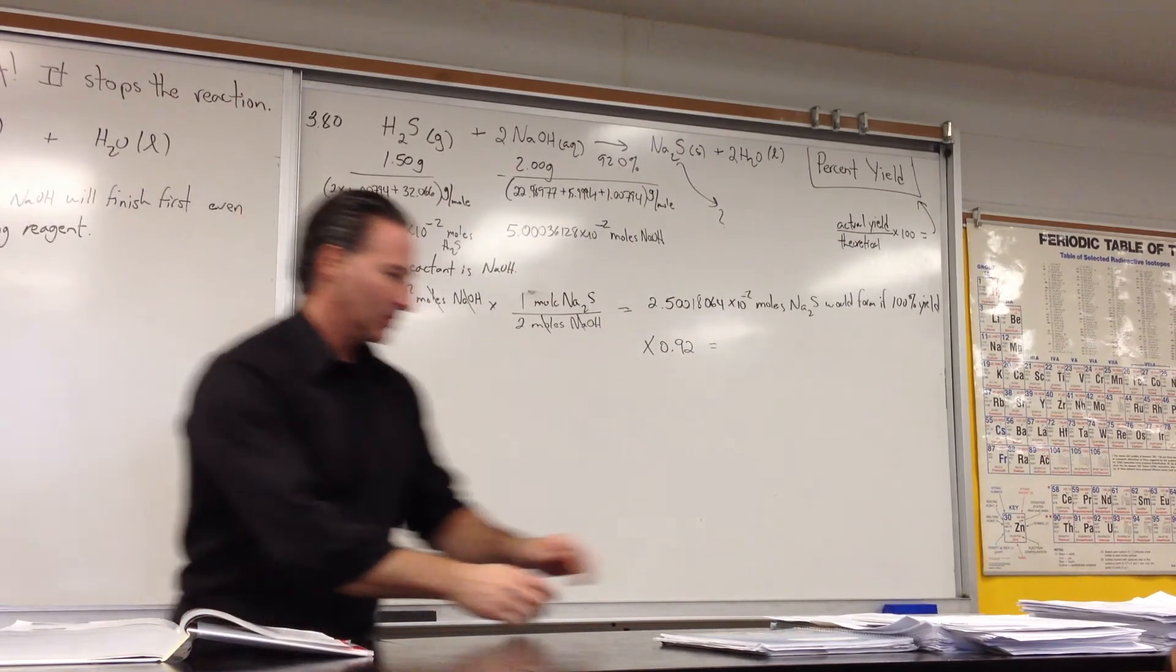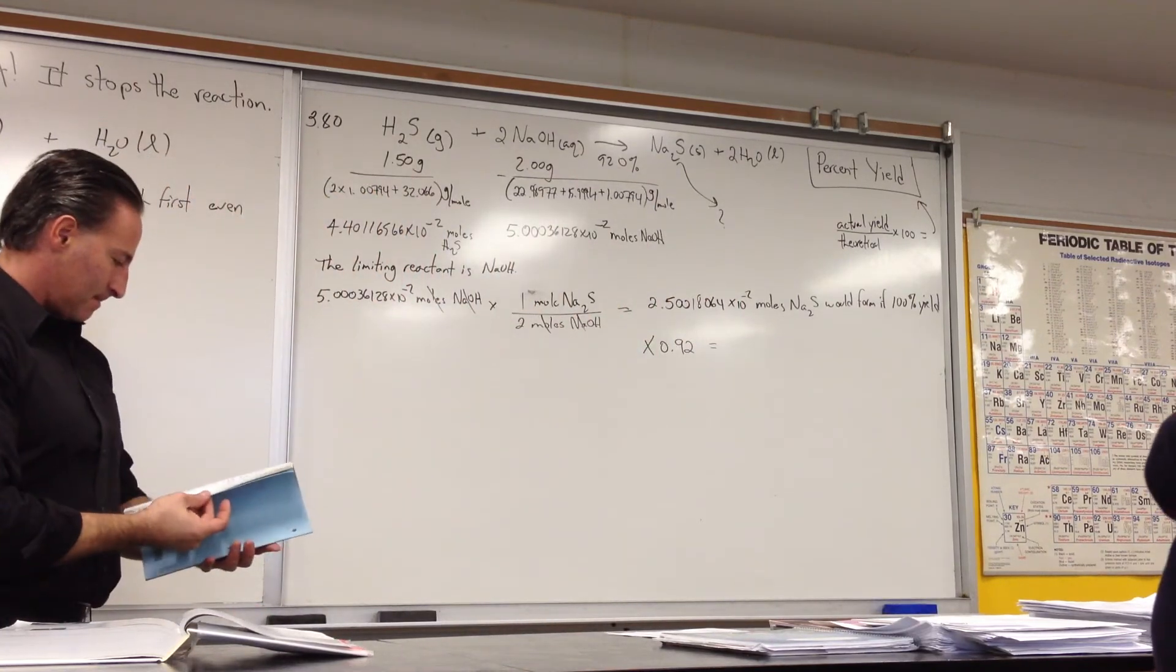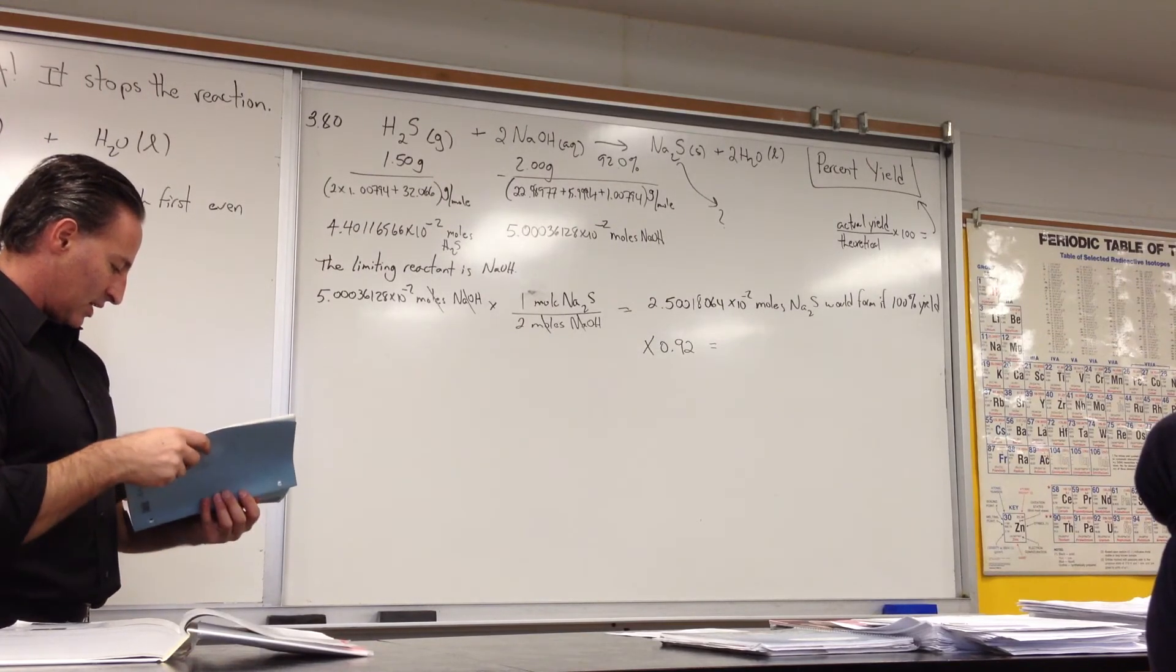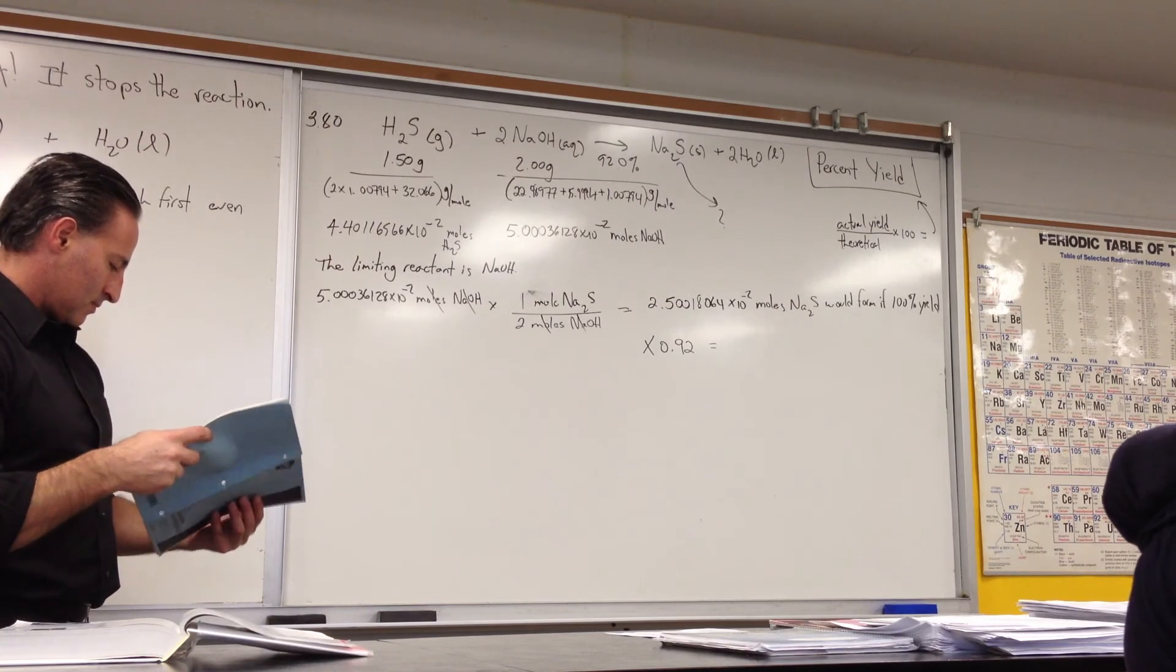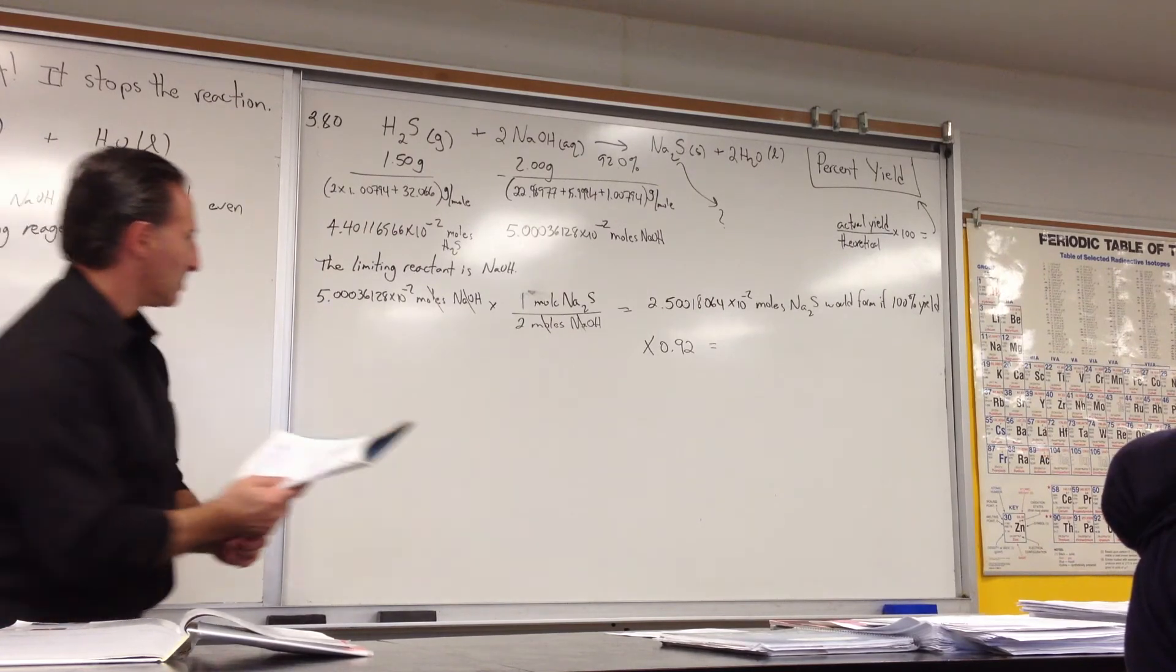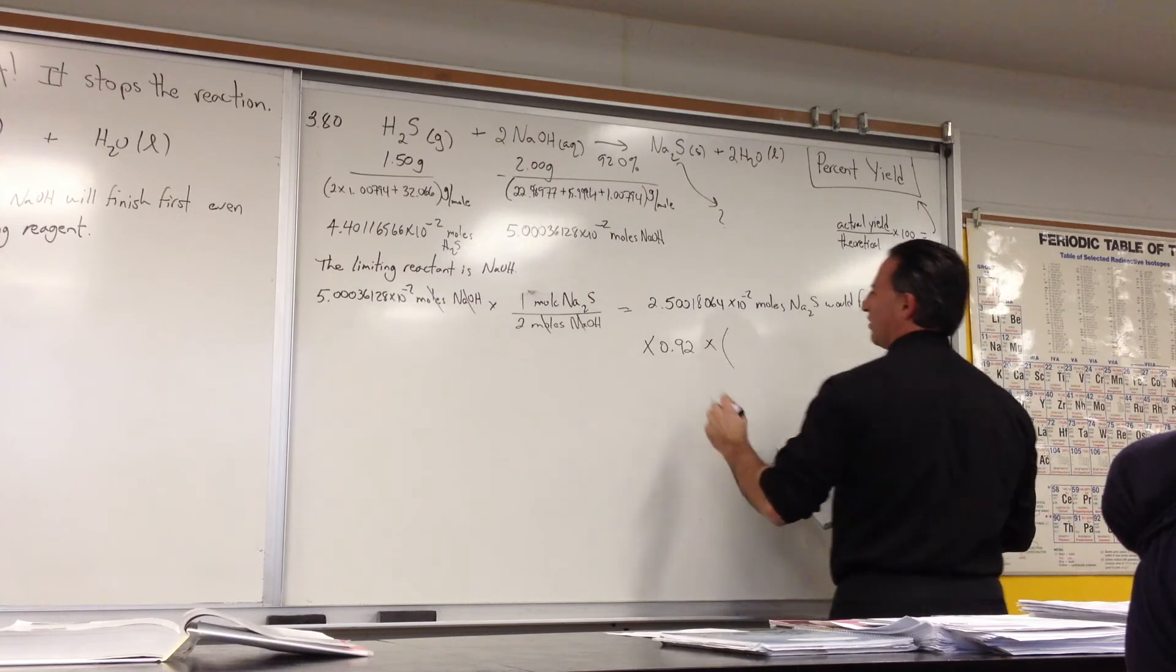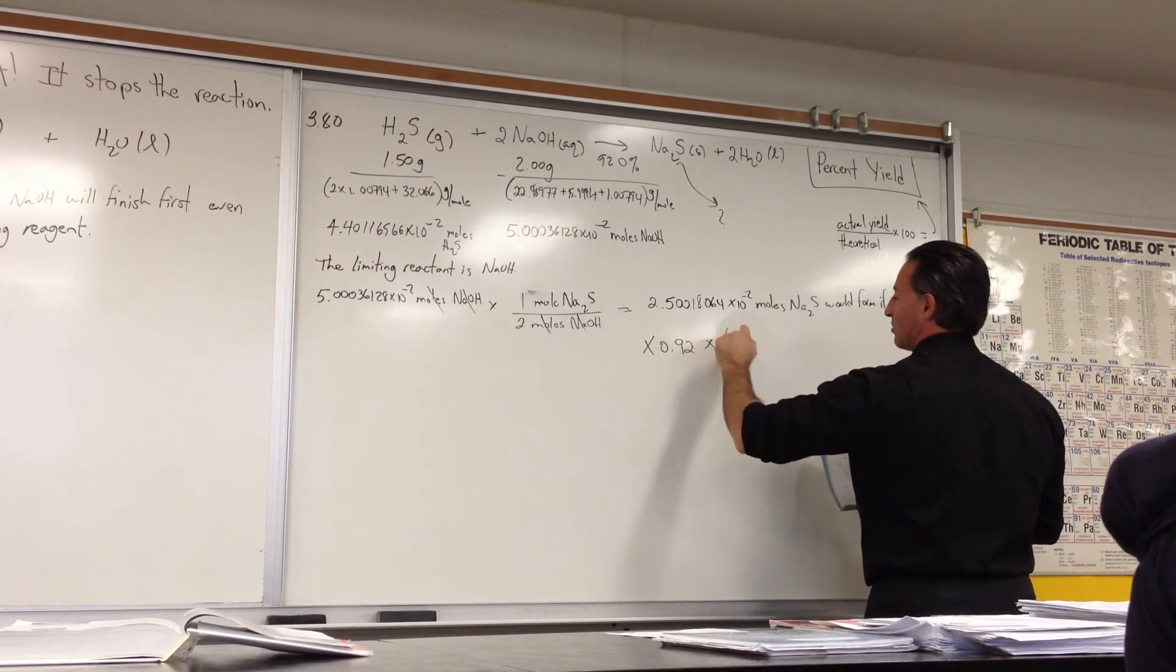Let me just move it over here. They're asking for grams, not moles. So we're going to multiply by the molar mass of sodium sulfide. So it's 22.98977 times 2, plus the molar mass of sulfur, 32.066.